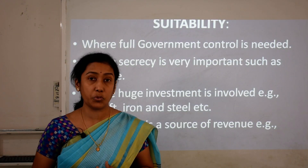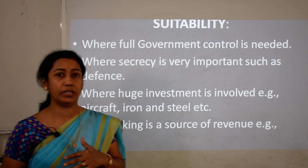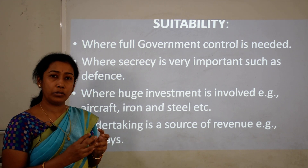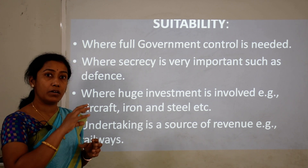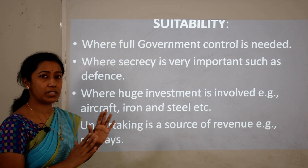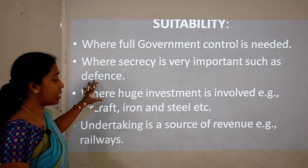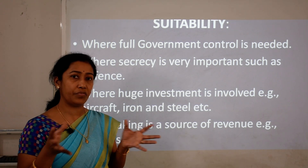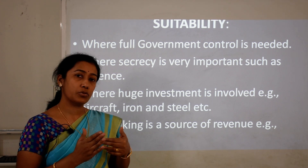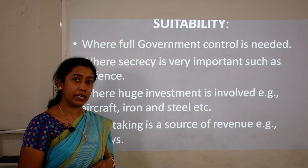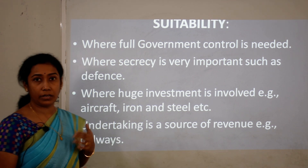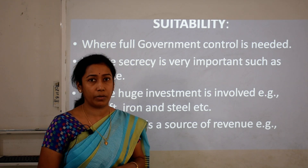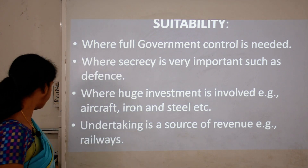Departmental undertakings are suitable where full government control is needed — for example, defense, or industries requiring huge investment like aircraft, iron and steel. They are also suitable where the undertaking is a source of revenue for the government, such as Indian Railways, which is majorly responsible for generating government income.